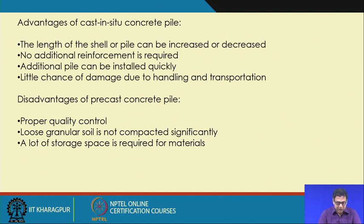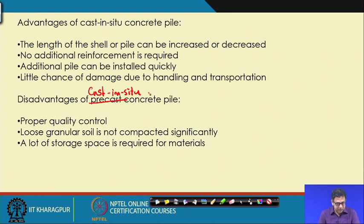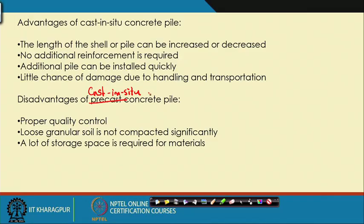The disadvantage of cast-in-situ concrete piles: unlike precast piles constructed in a controlled environment, quality control here is difficult. We have to ensure reinforcement is properly placed, that there is no shift during concreting, and that concreting is properly compacted.